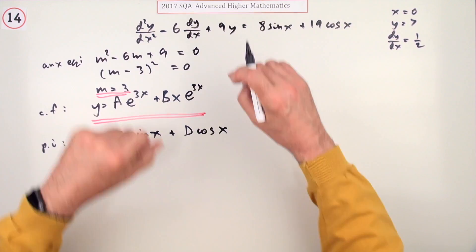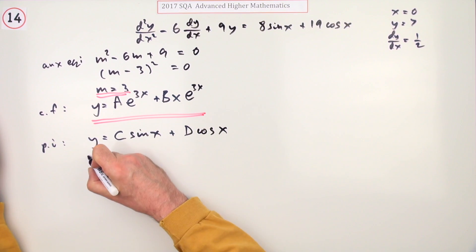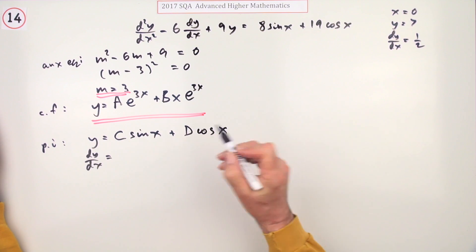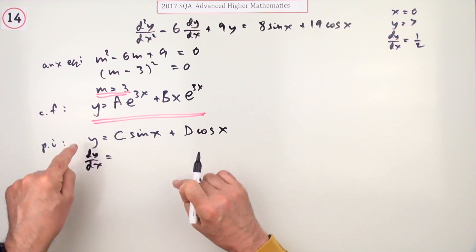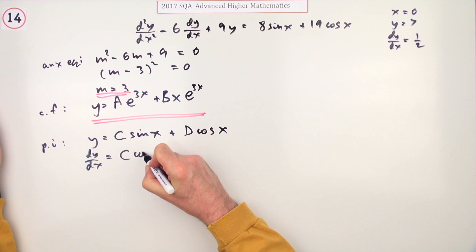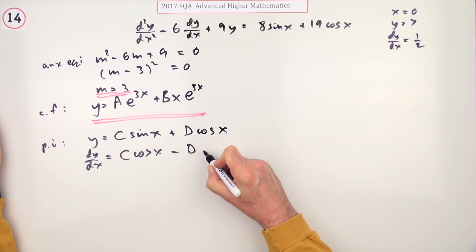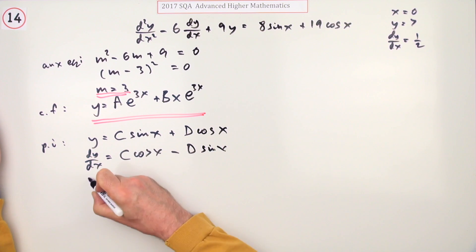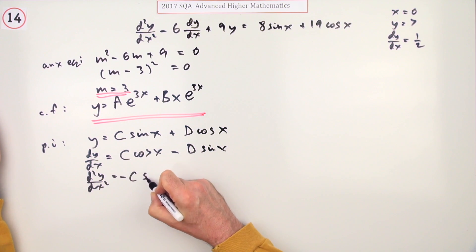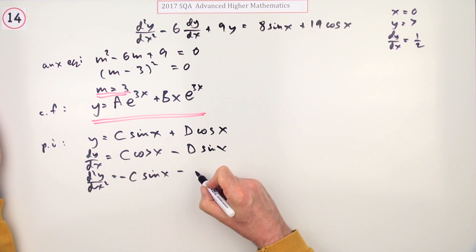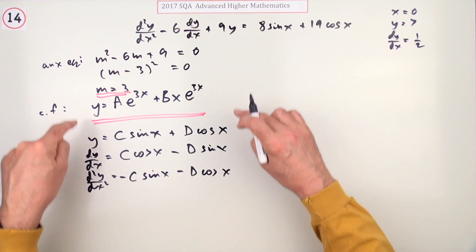I need to differentiate that twice so you can feed it back into this and compare it. dy/dx would be C cos x minus D sine x, and the second derivative will be minus C sine x minus D cos x.